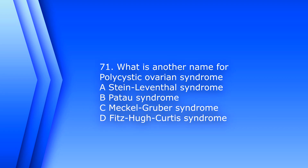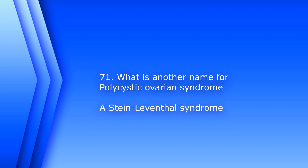Question 71. What is another name for polycystic ovarian syndrome? A. Stein-Leventhal syndrome, B. Patel syndrome, C. Meckel-Gruber syndrome, D. Fitzhugh-Curtis syndrome. The answer is A, Stein-Leventhal syndrome.